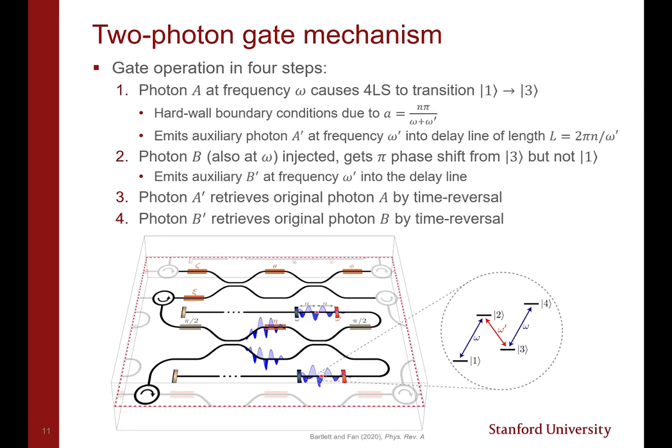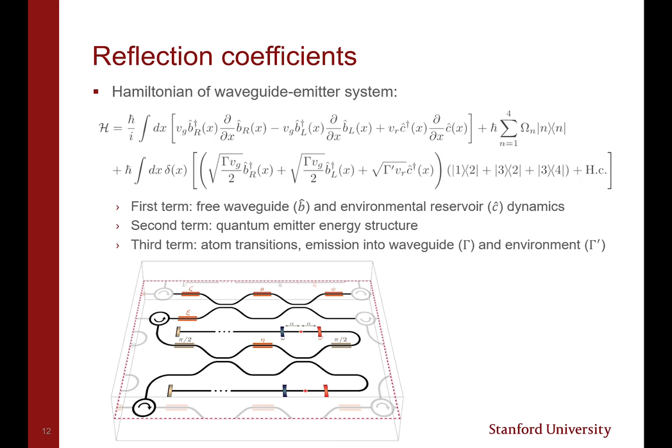and in step 4, photon B′ also retrieves photon B. At the end of the gate operation, the atom is fully disentangled from the two-photon state, and the |1,1⟩ component of the photon state has acquired a π phase shift, implementing a controlled-Z operation.